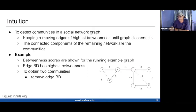That's the intuition for the Girvan-Newman algorithm. Just keep removing the edges of the highest betweenness until you disconnect the graph into as many components as you have communities that you want to detect. If you want to detect three communities, you keep removing edges from this graph of the highest betweenness until you disconnect the graph into three connected components, and those three connected components would then be your communities.